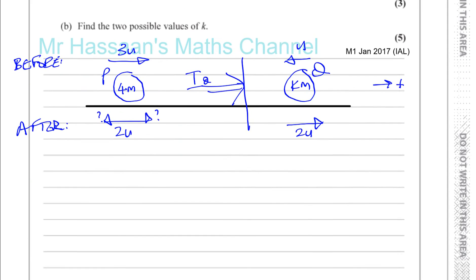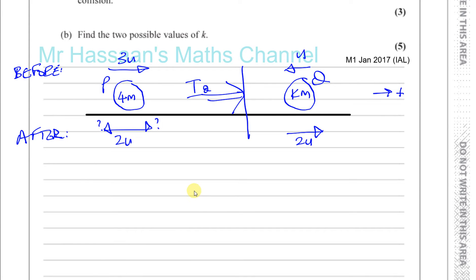We want to find the impulse received by Q. The impulse received by Q is going to be its change in momentum. Remember, in general, the impulse is equal to the mass times the change in velocity, the final velocity minus the initial velocity. Here, the mass is KM, and the final velocity is the velocity after the collision, which is 2U in the positive direction. Take away the initial velocity, which is U in the negative direction, so that's minus U here.